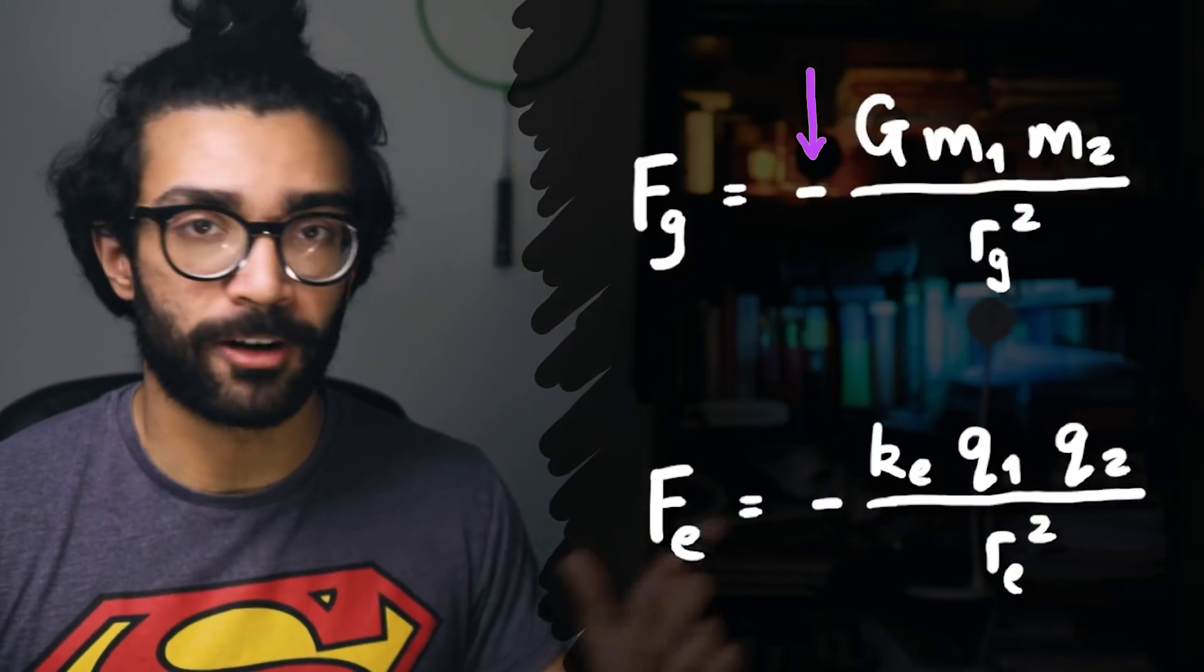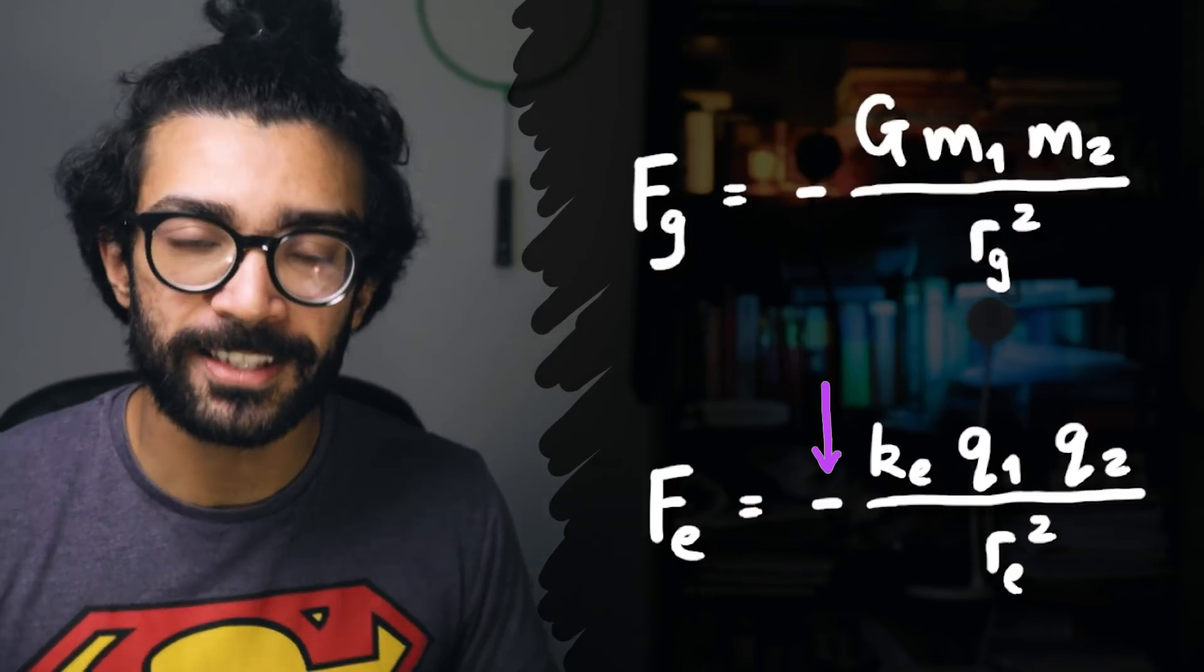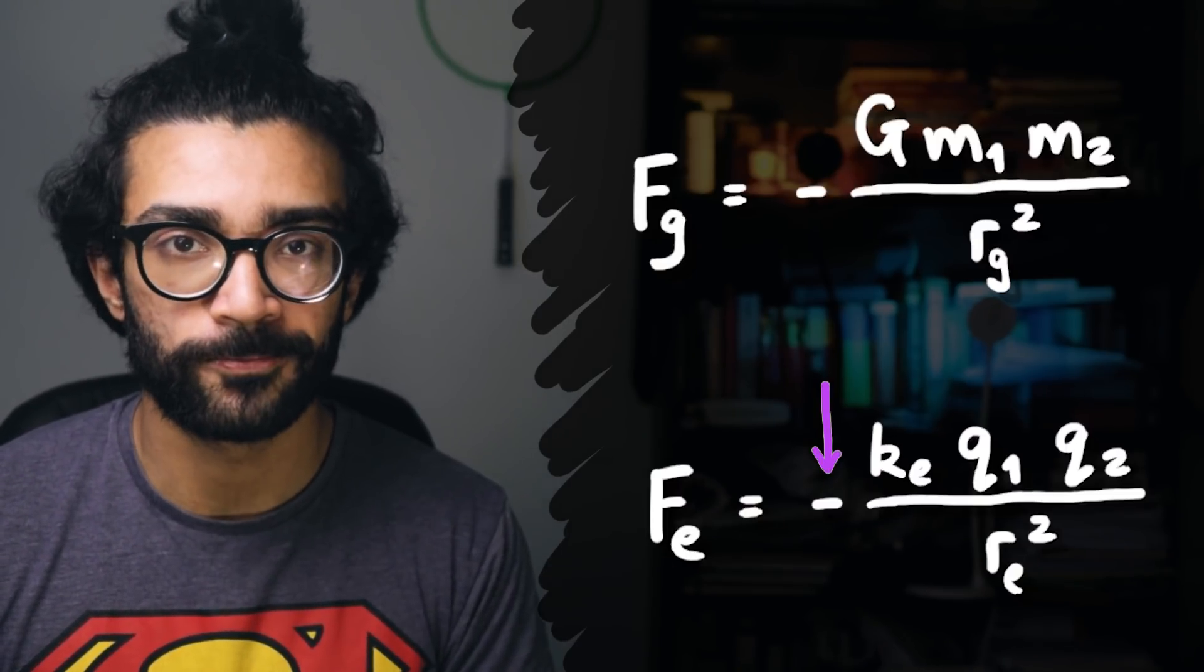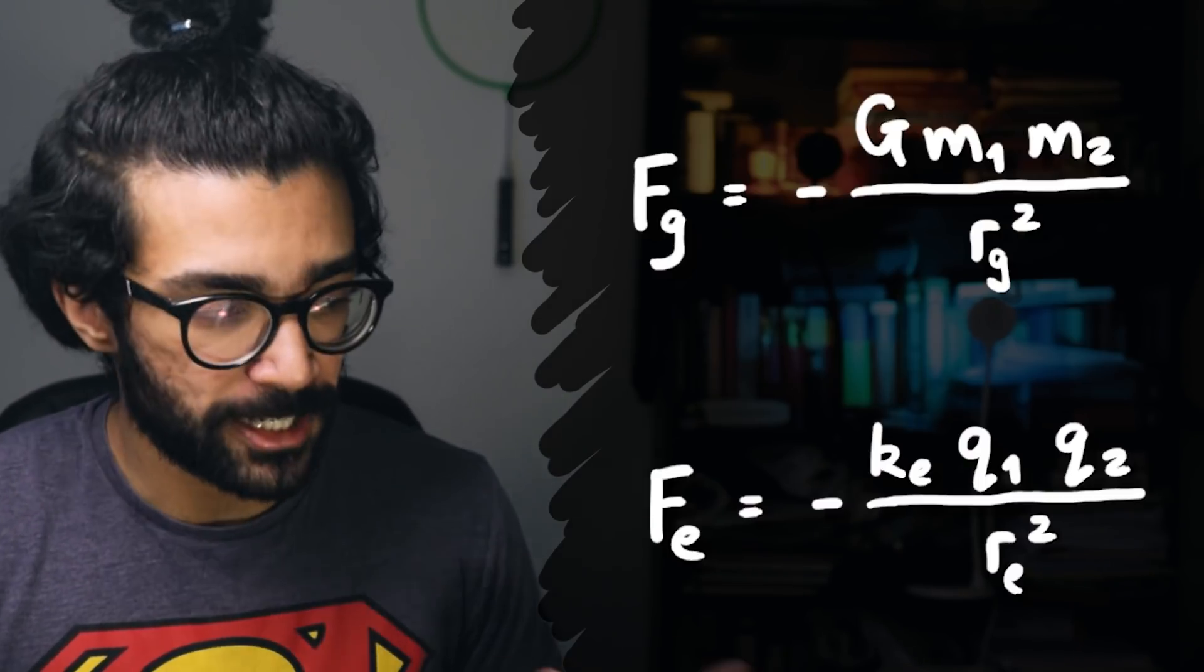However, the negative sign in the gravitational equation is actually inbuilt to the equation, whereas the negative sign in this equation comes from the fact that we're dealing with a negatively charged electron. Either way though, the final result in both cases is an attractive force.